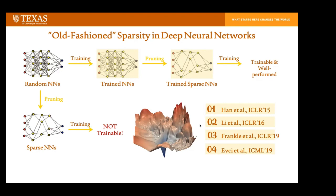Instead of training from scratch, consider starting from a pre-trained model — more relevant to today's discussion. The routine is the same: prune and retrain iteratively. One of our early works, a paper at ICLR 2020 called 'Pre-trained Lottery Tickets in BERT,' was perhaps the first to discover you can apply the IMP routine on an official BERT checkpoint and sparsify BERT without damaging its transferability to downstream tasks like GLUE or SQuAD.